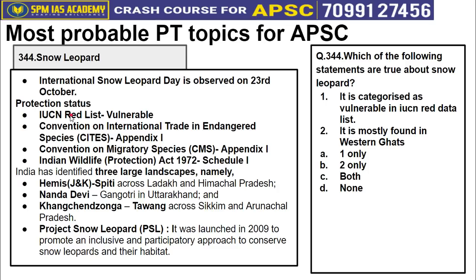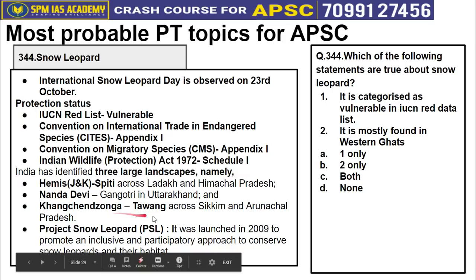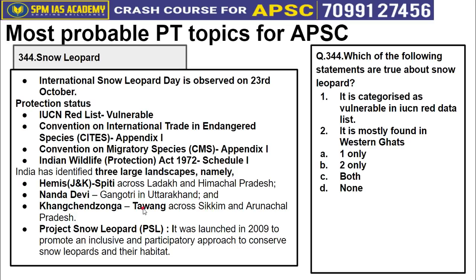Topic 344 is about the Snow Leopard. Snow Leopard Day is observed every year on 23rd October. Its IUCN status is Vulnerable, and it is listed under Appendix 1 of CITES, Appendix 1 of the Convention on Migratory Species (CMS), and Schedule 1 of the Wildlife Protection Act 1972. In India, it is mainly found in three large landscapes: Hemis National Park and Spiti Valley, Nanda Devi in Uttarakhand, and the Kanchenjunga-Tawang area spanning Sikkim and Arunachal Pradesh. Project Snow Leopard has been running in India since 2009 to conserve their population.